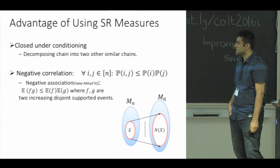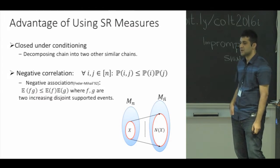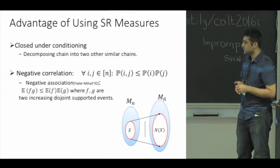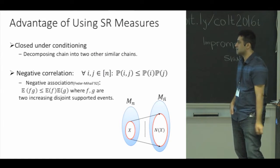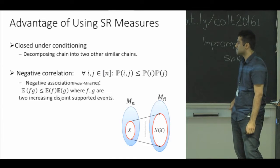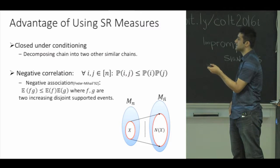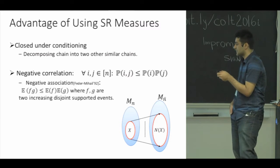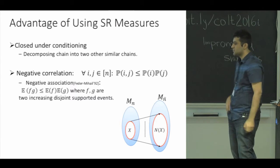In fact, what we use is negative association, which is a generalization of negative correlation introduced by Feder and Mihail. It says that for any two functions f and g which depend on two disjoint subsets of the ground set and are also increasing, meaning that adding elements to a subset doesn't decrease the value of the function, then the expected value of their product is at most the product of their expected values.